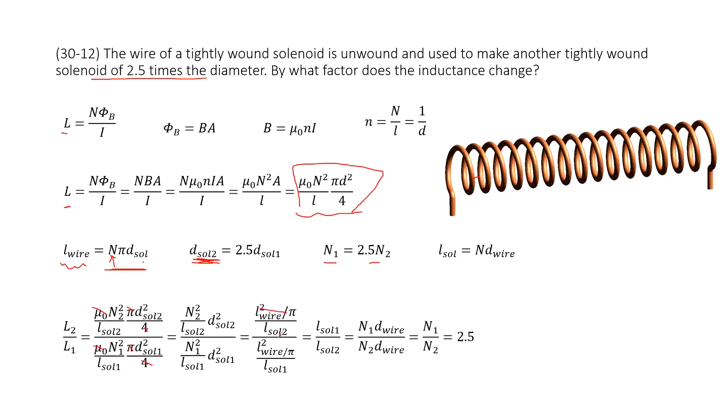And this part, the length for solenoid 2, write it there, length for solenoid 1, write it there. And these two terms cancel. So we get the equation to this one, L solenoid 1, L solenoid 2.